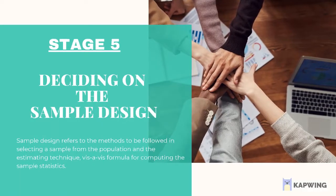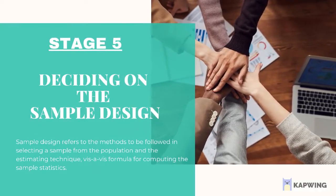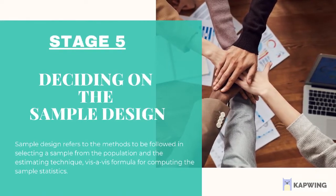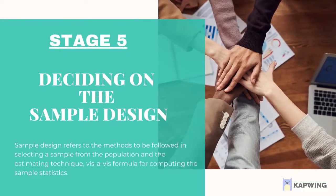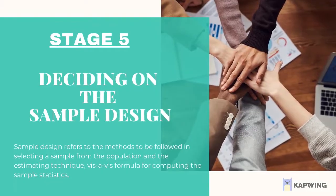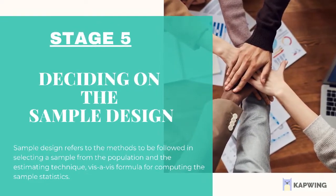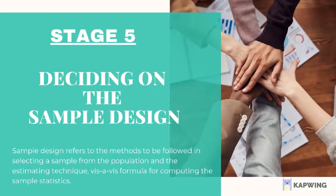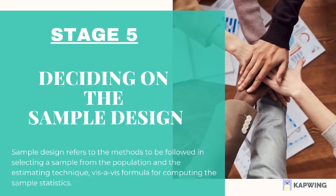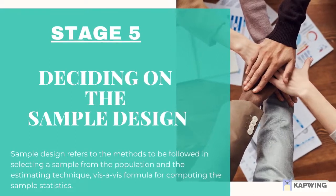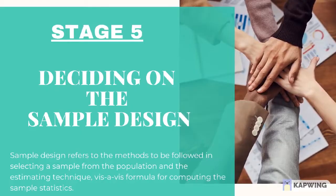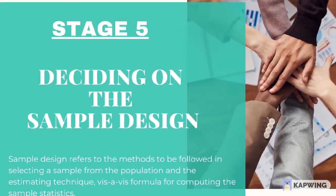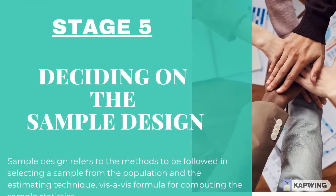Step 5: Deciding on the sample design. Sampling is an important and separate step in the research process. The basic idea of sampling is that it involves any procedure that uses a relatively small number of items or portions, called a sample, of a universe, called population, to conclude about the whole population. It contrasts with complete enumeration, in which every member of the population is included — referred to as census. A population is the total collection of elements about which we wish to make some inference or generalization. A sample is a part of the population, carefully selected to represent that population. Sample design refers to the methods to be followed in selecting a sample from the population and the estimating technique for computing the sample statistics.